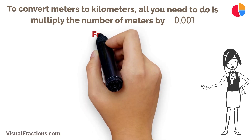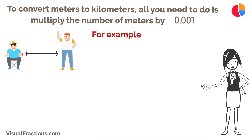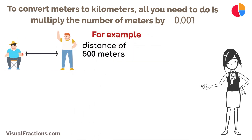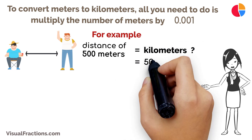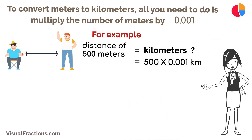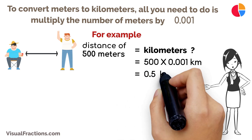For example, if you have a distance of 500 meters and you want to know how many kilometers that is, just multiply 500 meters by 0.001. This gives you 0.5 kilometers.